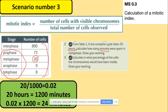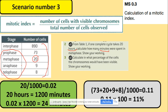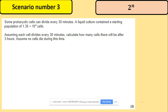Another question asks for the percentage of cells in which chromosomes would be visible. Chromosomes are visible during prophase, metaphase, anaphase, and telophase. Add the cells in all mitotic stages and divide by the total of 1000, giving 0.11. Multiply by 100 for a percentage: the answer is 11%.